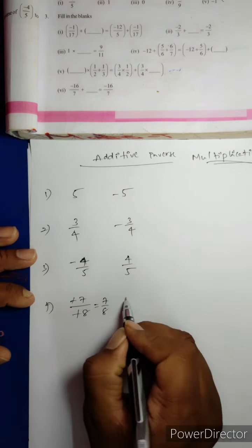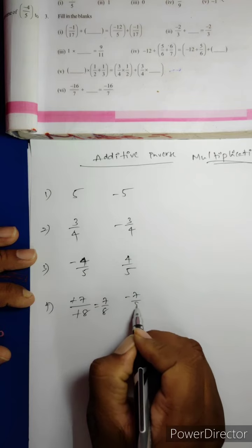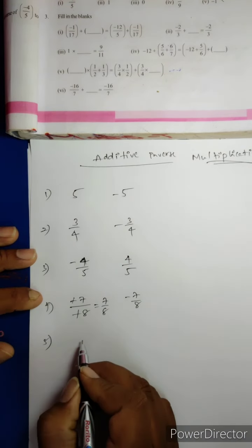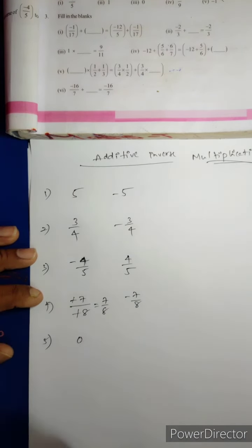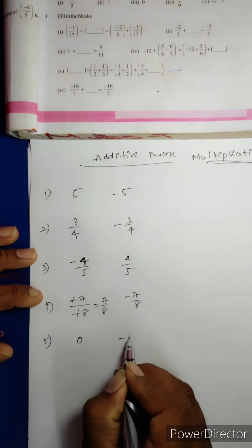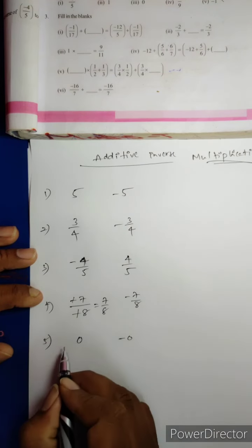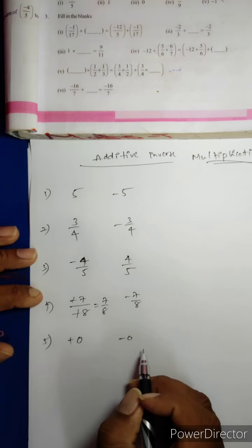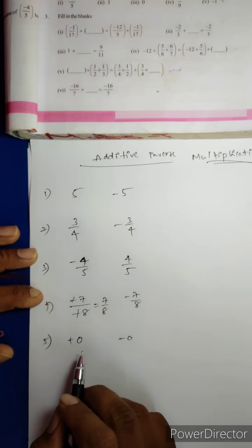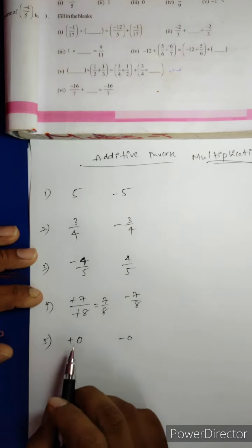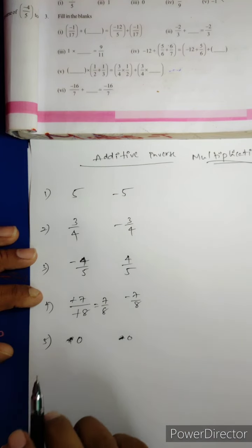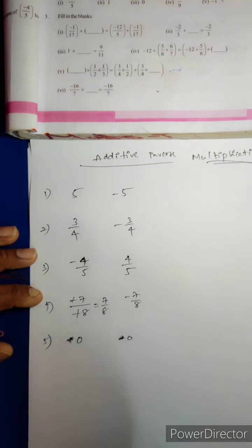What is the Additive inverse of 7/8? It is −7/8. What is the Additive inverse of 0? 0 is neither a positive nor a negative number, so the additive inverse of 0 is also 0.